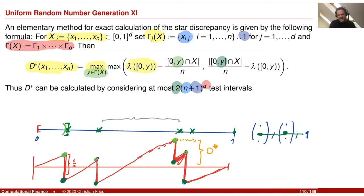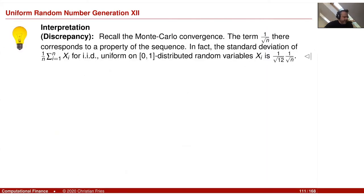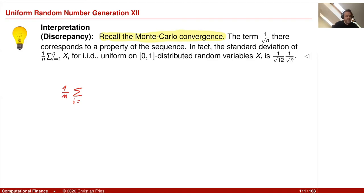So we now have two concepts: a measure of function variation (Hardy-Krause variation V(f)) and a measure of sequence quality (discrepancy D*). The Koksma-Hlawka inequality combines them: if f has bounded Hardy-Krause variation on [0,1]^d, then for any sequence x_1,...,x_N, the error of our Monte Carlo approximation satisfies |error| ≤ V(f) · D*(x_1,...,x_N).